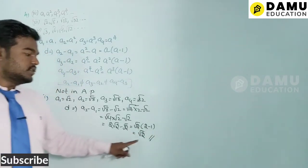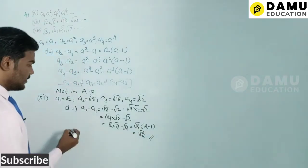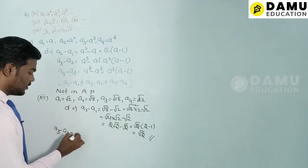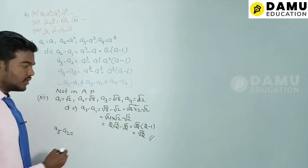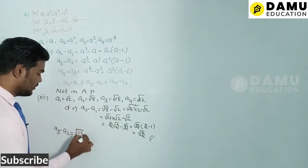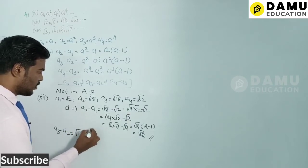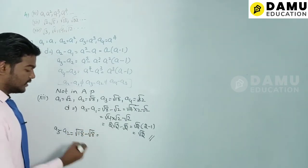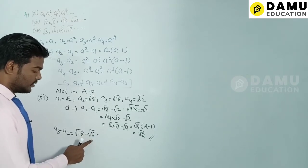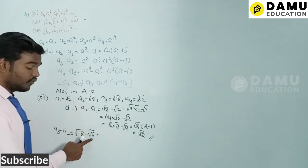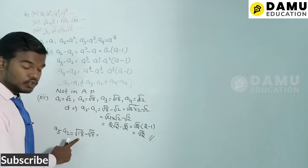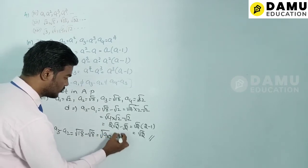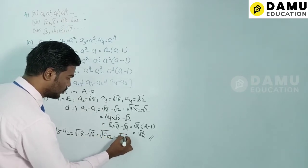Then a3 − a2 = √18 − √8. We write √18 = √(9×2) = 3√2 and √8 = 2√2. So a3 − a2 = 3√2 − 2√2.